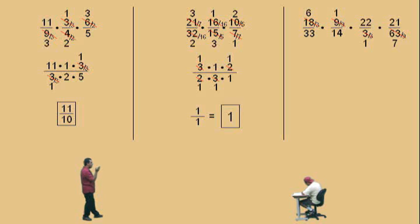Now notice, we have a 22 and a 33. Those are both divisible by what number, Charlie? 11? An 11, that's right. So 22 divided by 11 is a 2. 33 divided by 11 is a 3.